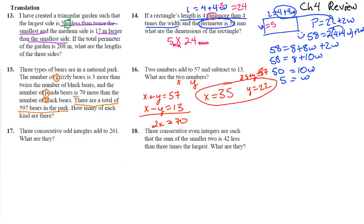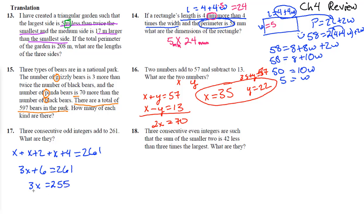Number 17: three consecutive odd integers. That's x, then x plus 2, then x plus 4 — because to get from one odd number to the next you skip an even. They add to 261: 3x plus 6 equals 261. Subtract 6: 3x equals 255. Divide by 3: x equals 85. So the three integers are 85, 87, and 89.